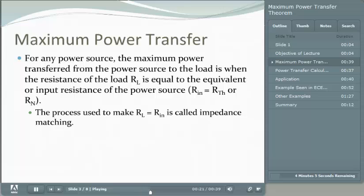is equal to the equivalent or input resistance of the power source, where the input resistor equals the Thevenin equivalent resistance or the Norton equivalent resistance of the power source. The process used to make RL equal to Rn is called impedance matching.